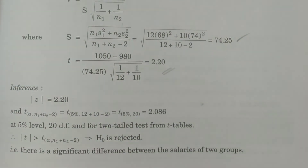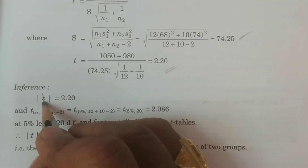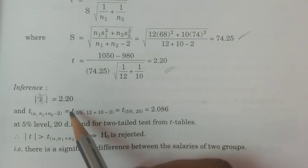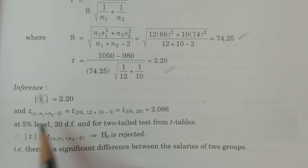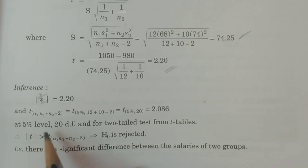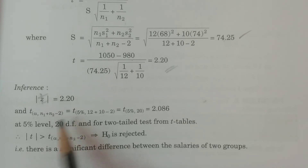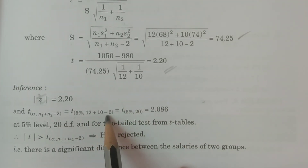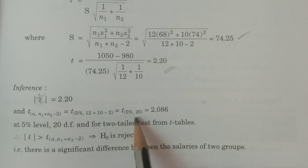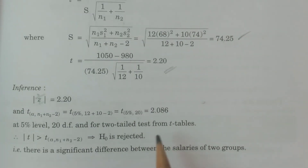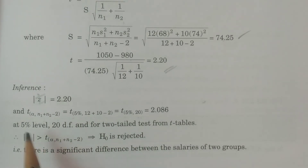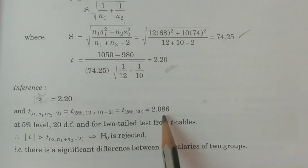Now the fourth point: comparison and conclusion. The modulus of t is equal to 2.20. The tabulated value is t at alpha with n1 + n2 − 2 degrees of freedom. Alpha is not specified in the problem, so we use the 5% level of significance. Degrees of freedom = 12 + 10 − 2 = 20. From the two-tailed test table at 5% level with 20 degrees of freedom, the tabulated value of t is 2.086.